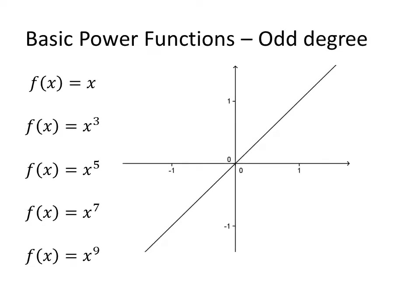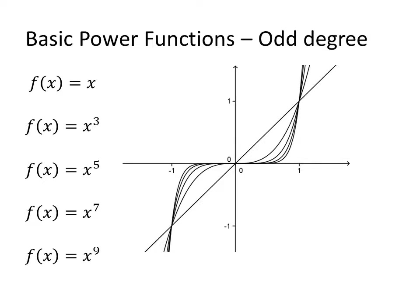Zooming in at the origin for odd functions: x crosses through the origin and goes through (1,1) and (-1,-1). x cubed also goes through these three points but flattens out near zero. x to the fifth is even more flat than x cubed, x to the seventh is flatter yet near zero but steeper near 1 and -1, and x to the ninth gets even flatter near the origin and steeper through 1. This pattern continues with higher odd powers.